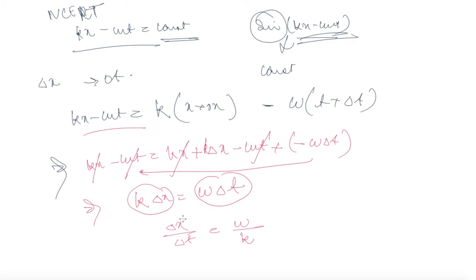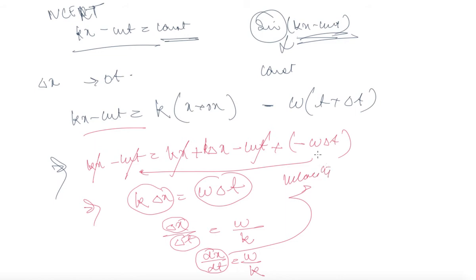For a very small change in x and t, we have dx/dt equals omega upon k. This is nothing but your velocity. So velocity v equals omega upon k, where omega is the angular frequency of the wave and k is the angular wave number. This is how you define wave velocity.